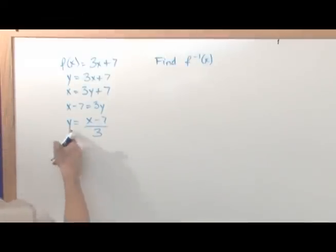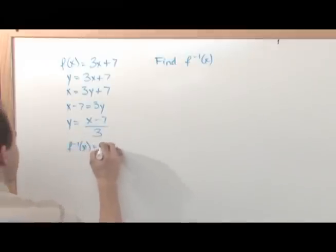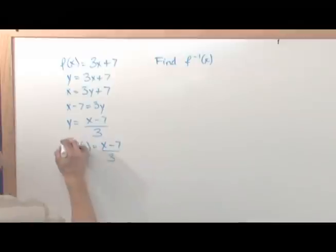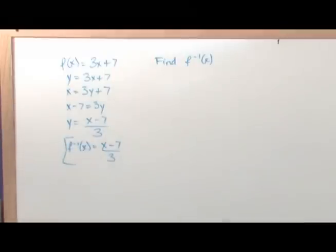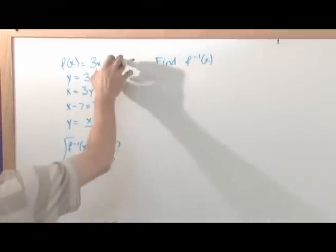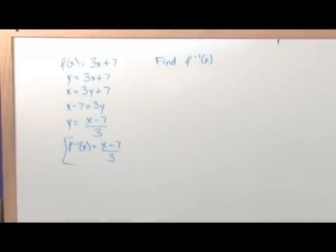And then the last step is to replace y with f inverse of x because that's what y is equal to. And this is the inverse, x minus 7 over 3. This is the inverse function of this function here. Okay, so it's really not that hard.